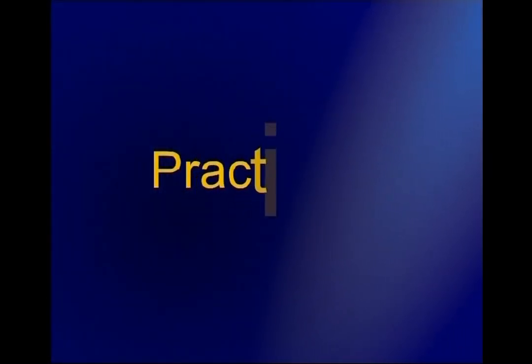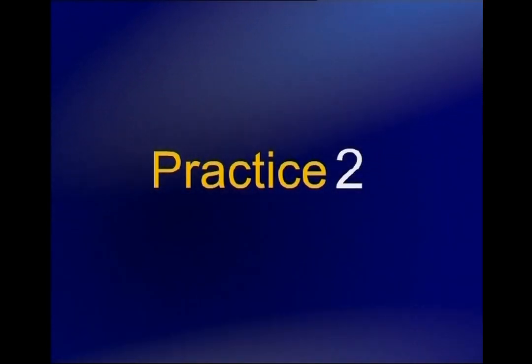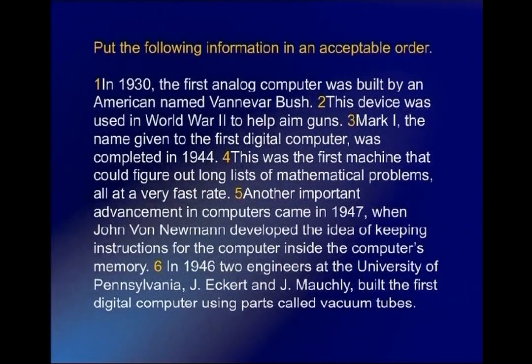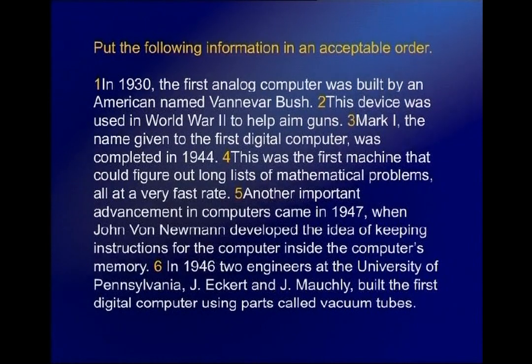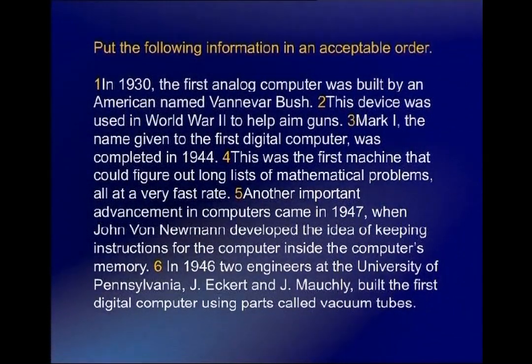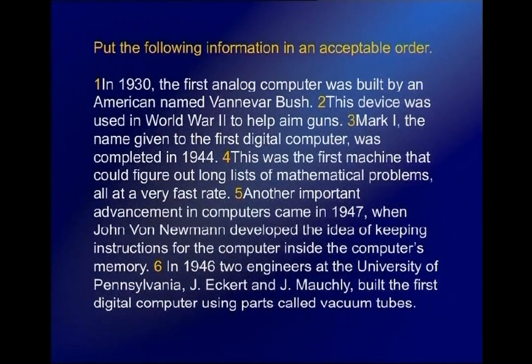In writing you can begin from the past, move on to the future, then go back to the present, then move forward again. Now for practice, there is a passage on the screen — read it and find which sentence is not in acceptable chronological order. You are familiar with this passage from the history of computers. The first sentence begins with 'in 1930,' then 1944 in sentence 3, then 1947 in sentence 4 or 5, and the last sentence says 1946 — that is the anomaly. Sentence number 6 should actually be placed before sentence number 5.